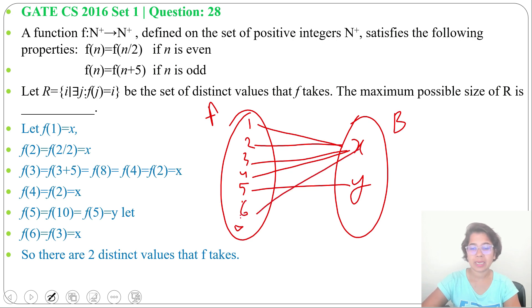Now f(6) is x, f(10) is y, like this. So set B contains only 2 values, x and y, that map to all positive integers of set A.